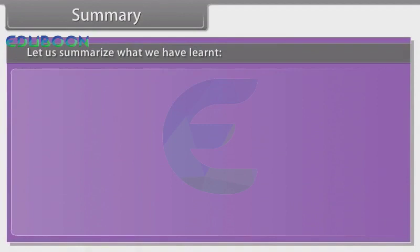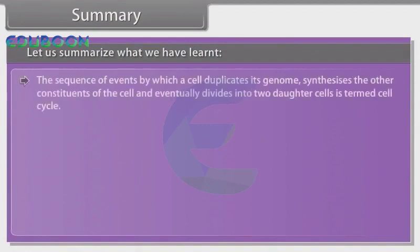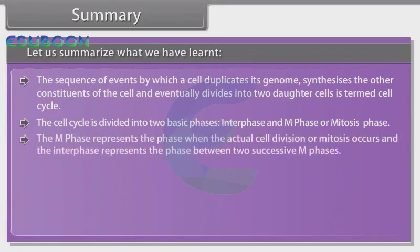Let us summarize what we have learned. The sequence of events by which a cell duplicates its genome, synthesizes the other constituents of the cell, and eventually divides into two daughter cells is termed cell cycle. The cell cycle is divided into two basic phases: interphase and M phase or mitosis phase. The M phase represents the phase when the actual cell division or mitosis occurs, and the interphase represents the phase between two successive M phases. The interphase is divided into three further phases: G1 phase, S phase, and G2 phase.